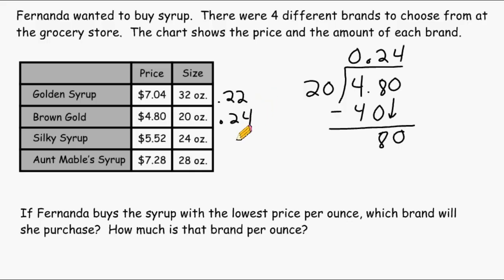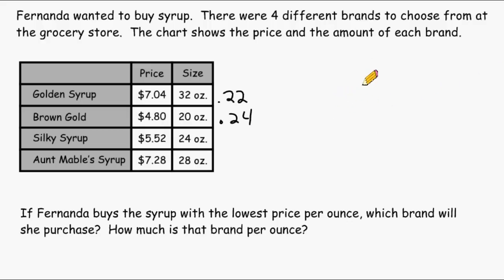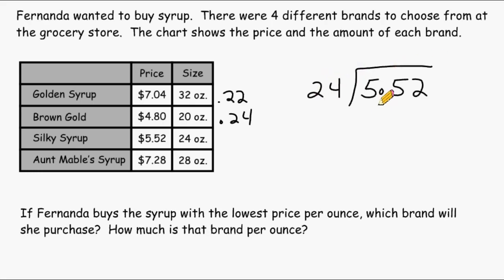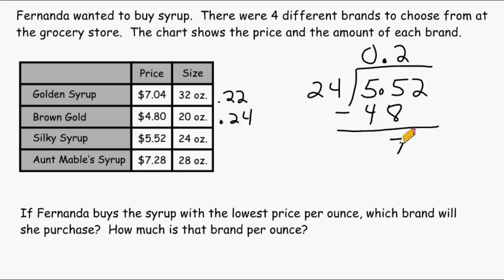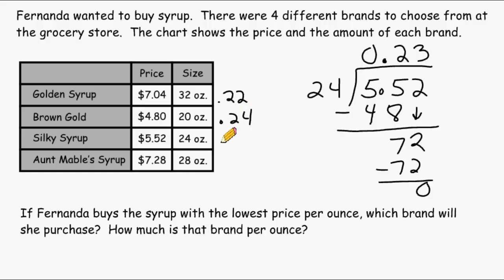Now let's figure out the unit price of Silky Syrup per ounce. We have to take five dollars and 52 cents and divide that by 24 ounces. Let's write our decimal straight above where it's currently located and write a zero above the five. We divide 24 into 55 — two groups of 24 gives us 48, and the difference of 55 and 48 is 7. We bring down the 2 and divide 24 into 72, which is exactly 3 with no remainder. So the unit price per ounce of Silky Syrup is 23 cents per ounce.